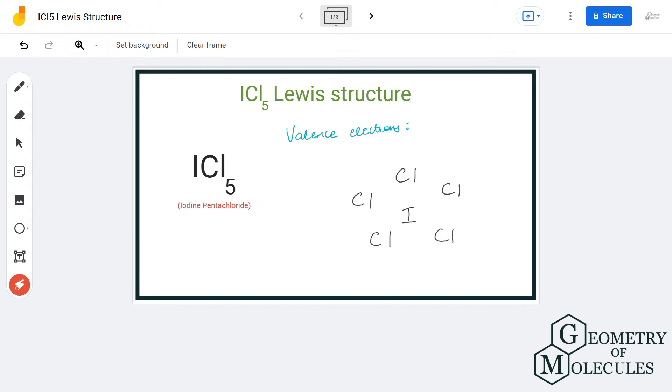Hi guys, welcome back to our channel. In today's video we are going to help you with ICl5 Lewis structure. It is a chemical formula for iodine pentachloride, and in this video we will look at its Lewis structure.